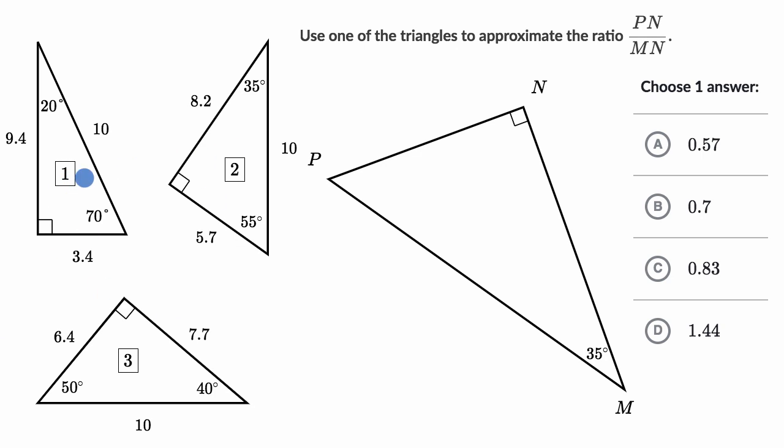We've been given some information about these three triangles here. They say use one of the triangles to approximate the ratio. The ratio is the length of segment PN divided by the length of segment MN. So they want us to figure out the ratio PN over MN. Pause this video and see if you can figure this out.